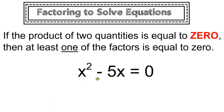Let's take a look at this quadratic equation. x squared minus 5x is equal to 0. Technically, we cannot solve this equation right now because we have two terms that are unlike.